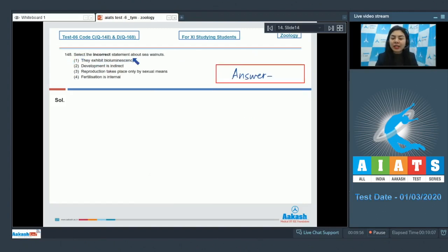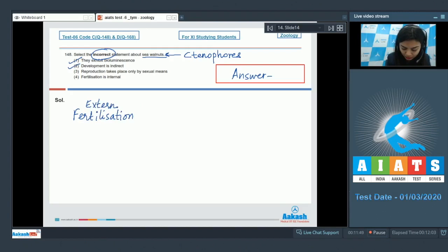Question 148. Select the incorrect statement about sea walnuts. We have to look for an incorrect statement about sea walnuts. Sea walnuts are nothing but ctenophores, also known as comb jellies. Looking for an incorrect statement, option one: they exhibit bioluminescence. This is correct. The property of a living organism to emit light is called bioluminescence, and this is a characteristic feature present in ctenophores. Option two: development is indirect. This is also correct. The fertilization in a ctenophore is external, means it occurs in the water outside the animal body. Then the zygote develops into a free swimming larva, also called cydipid larva. Thus, the development is indirect because a larval stage is present.